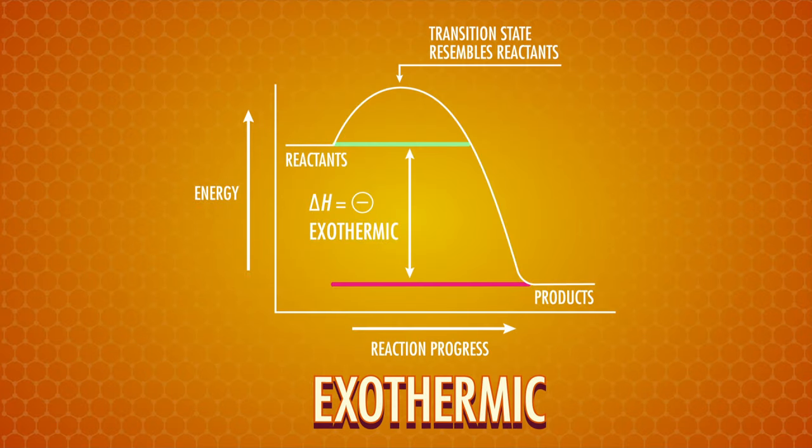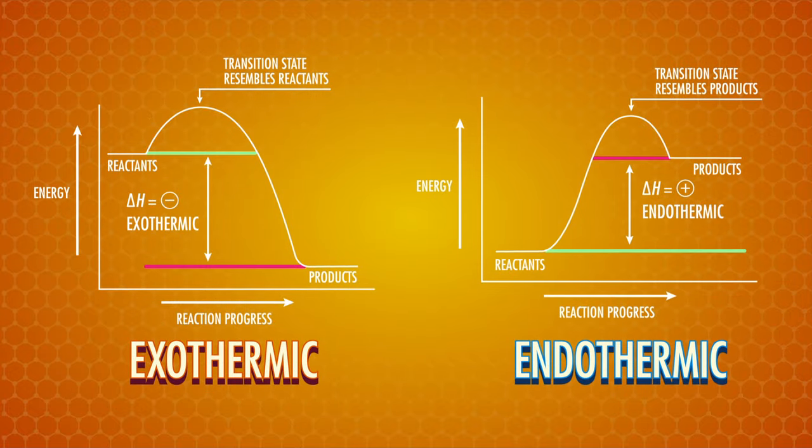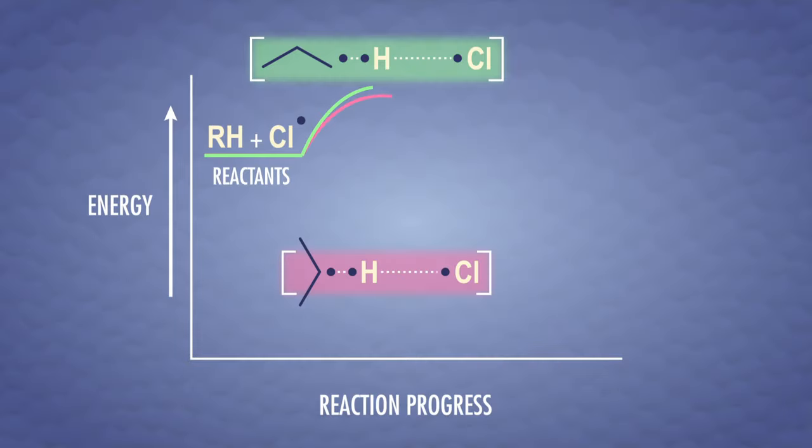In other words, the transition state for an exothermic reaction will look more like the reactants, while the transition state for an endothermic reaction will look more like the products. So in the first propagation step of radical chlorination, which is exothermic, the transition state looks a lot like the reactants and happens earlier along the reaction path.